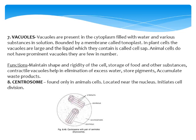In animal cells, vacuoles are not very prominent — they are very small and few in number, and sometimes not present at all. The functions of vacuoles include maintaining the shape and rigidity of the cell, storage of food and other substances, and storing pigments and accumulating waste products. The contractile vacuole, present in Amoeba, contracts and relaxes to help in elimination of water.